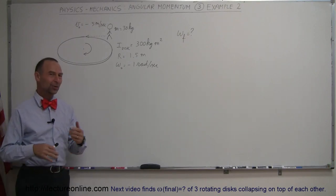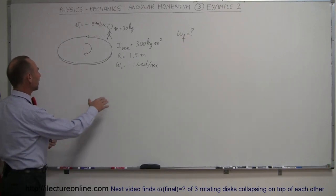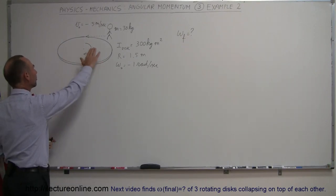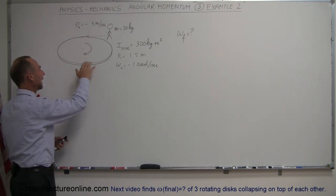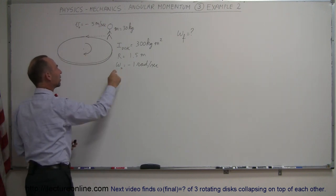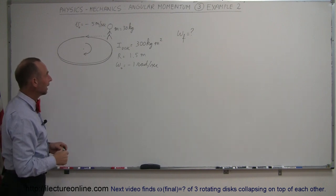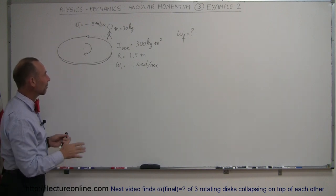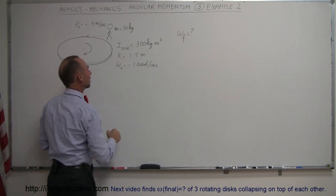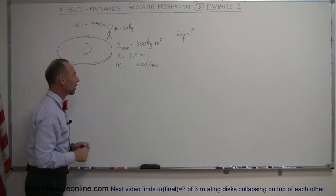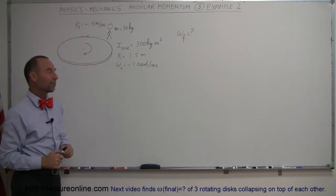Here's another example of how to use angular momentum. We have a spinning disc, spinning clockwise. Therefore, it has a negative angular velocity of minus 1 radian per second. We've already calculated the moment of inertia of the disc to be 300 kilogram meters squared. It has a radius of 1.5 meters.